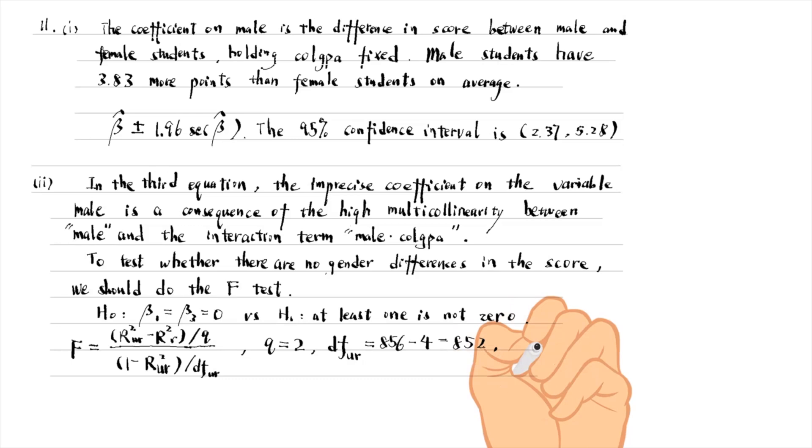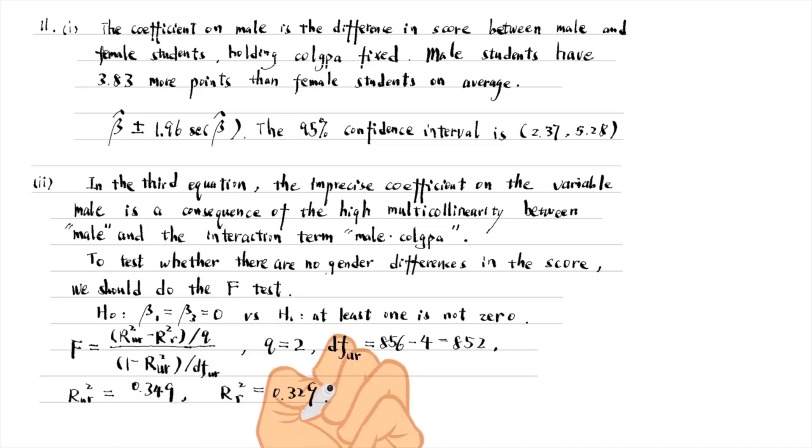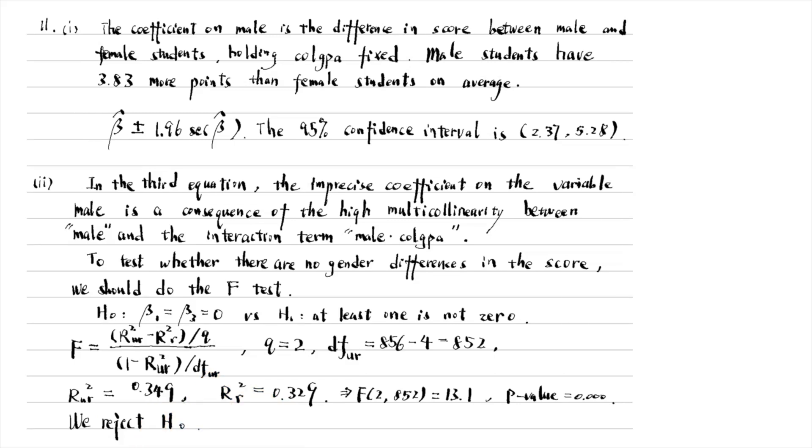The unrestricted model is the third equation. Its R-squared is 0.349. The restricted model is the first equation because the restriction is the two coefficients are 0. Its R-squared is 0.329. Plug in the values and we obtain the F-statistic of 13.1 and its p-value of 0 to 3 decimal places. We reject the null hypothesis and we conclude that there is a gender difference in the score after controlling for college GPA.